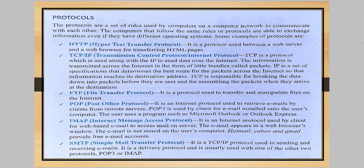Next is FTP — File Transfer Protocol — used to transfer and manipulate files on the internet. Next is POP — Post Office Protocol — an internet protocol used to retrieve email by clients from a remote server. POP3 is used by clients to have email installed onto the user's computer, using programs such as Microsoft Outlook or Outlook Express. Next is IMAP — Internet Message Access Protocol — an internet protocol used by clients for web-based email to access mail on a server. The email appears in the browser window and is not stored on the user's computer. Hotmail and Gmail provide free email accounts using this.